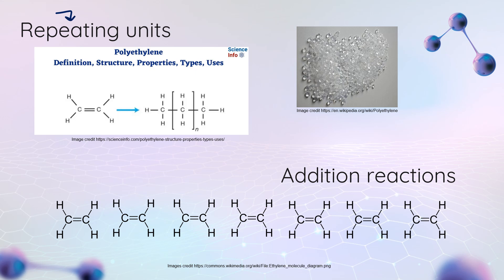All of our polymers are composed of repeating monomer units. The first polymer we're going to look at is composed of the monomer ethene, and we're going to make polyethene — also known as PE plastic or polyethylene. We use it to make plastic bags, cups, and bottles.